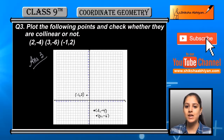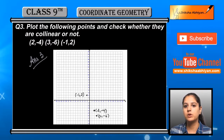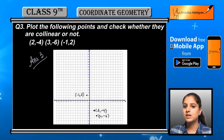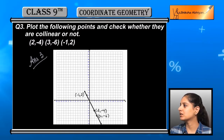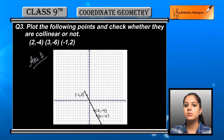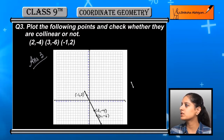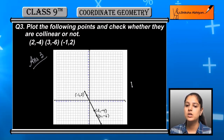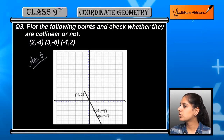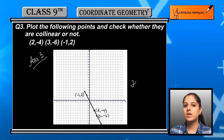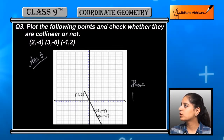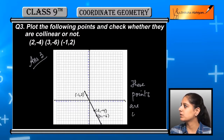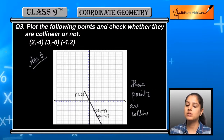Now we need to check whether these points are collinear or not. Collinear points are those which lie on the same straight line. So if we join these three points with a straight line and all three points lie on it, that means these three points are collinear.